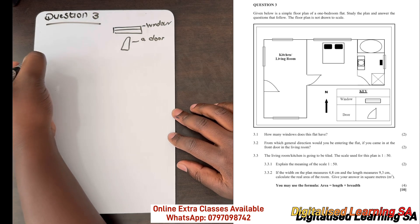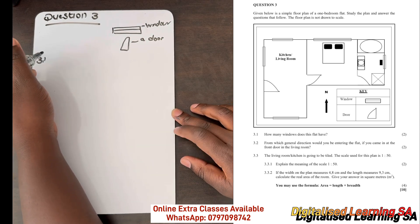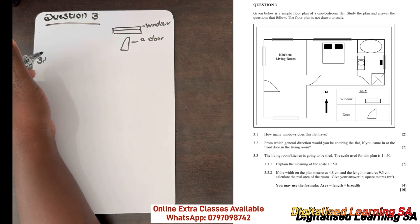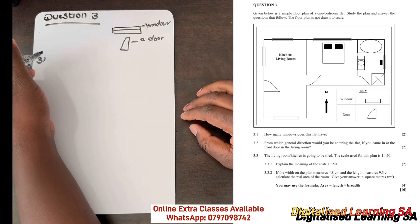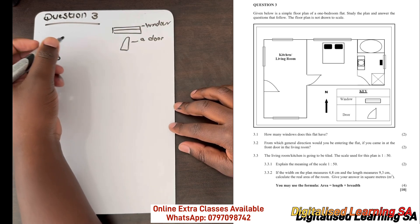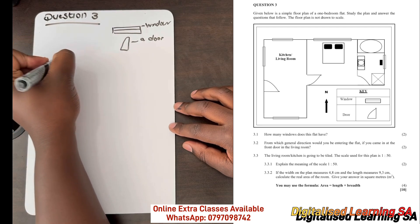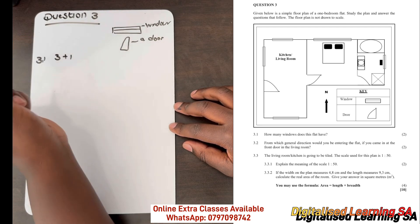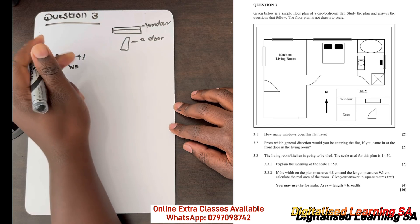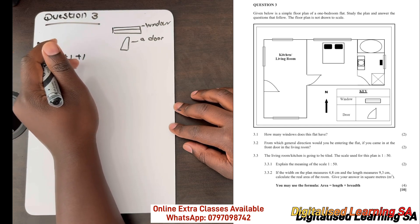Question 3.1 asks how many windows does this flat have. In the kitchen or living room we can see that there are three windows. In the bedroom there is one window, and in the bathroom there is also a window, meaning that our total is five windows.